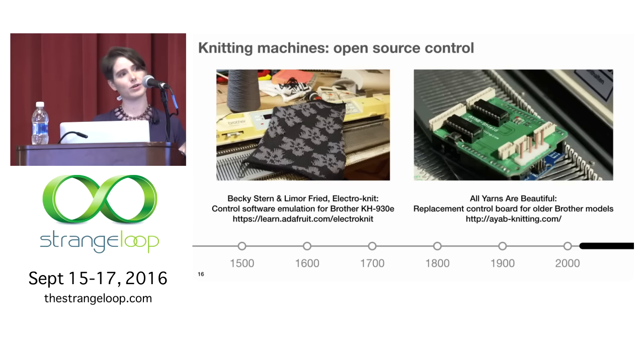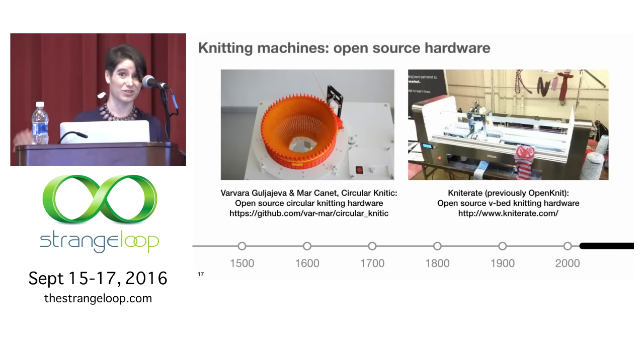So just some examples of that because I think it's important for you all to know that these things are out there. These are two software modification projects for knitting machines. So Becky Stern and Limor Freed on the left, building on Steve Conklin's disk emulator work. That's for the Brother KH930E model. And the All Yarns Are Beautiful project on the right, which is an Arduino override of some other Brother models. There's also some open source knitting machines, which is cool. You can print a knitting machine. On the left, a circular knitting machine like the sock ones earlier. It's called the Knitix project. And on the right, Knitter8, which is a flatbed knitting machine. Very cool.